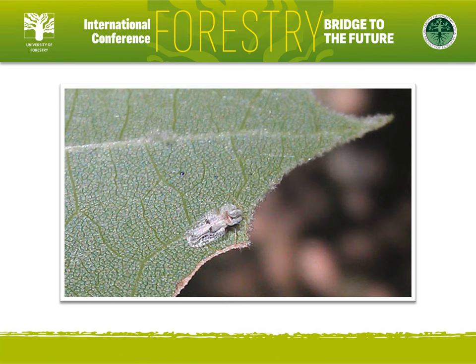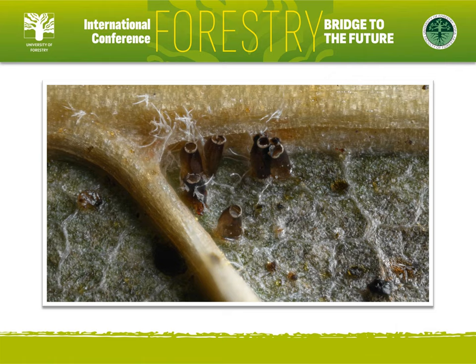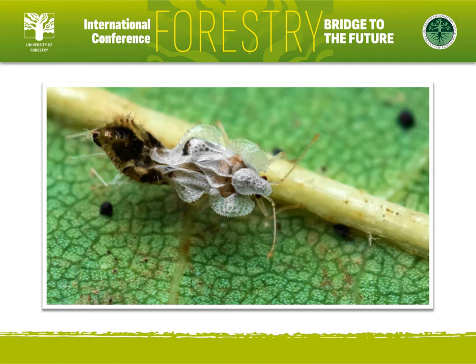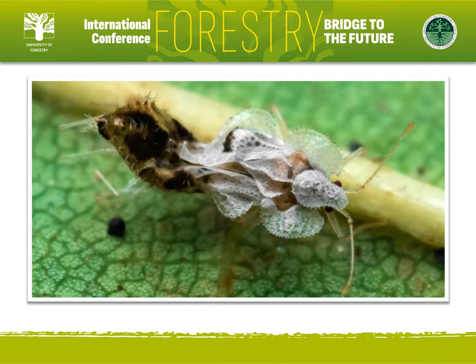Females lay eggs near larger ribs on the underside of leaves, preferably the forks of ribs. The first instar nymphs hatch in about 15 days. There are 5 instar stages, each requiring from 3 to 5 days. The adult emerges from the 5th nymph stage in a process called eclosion.